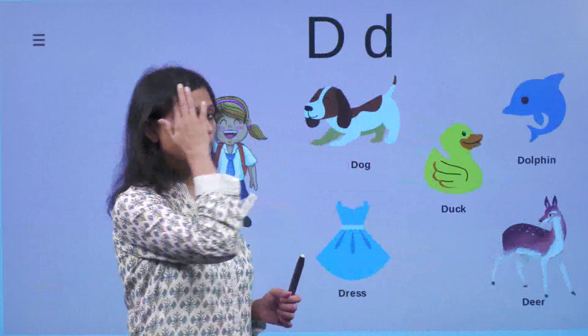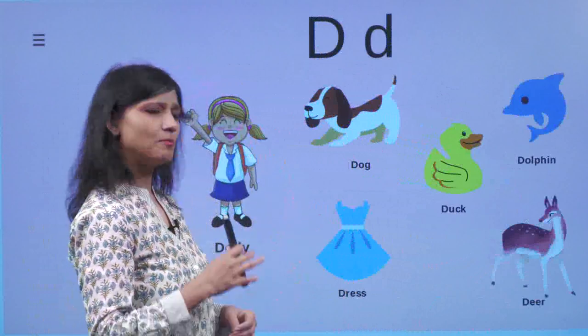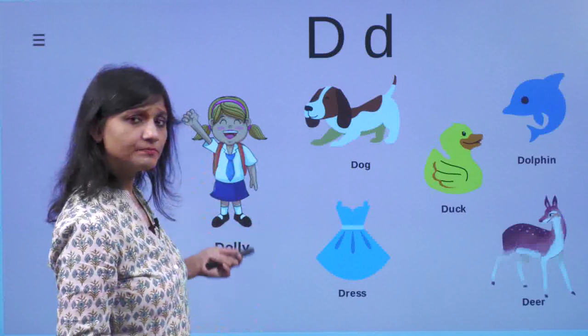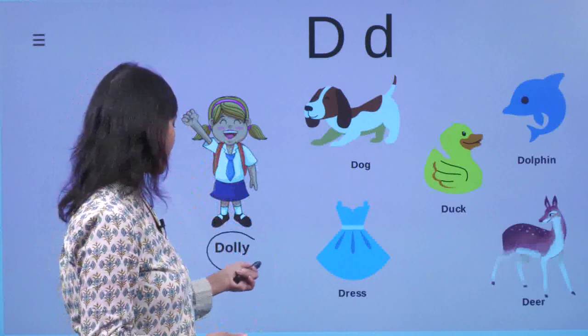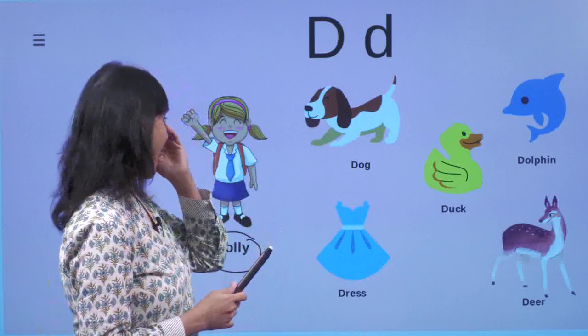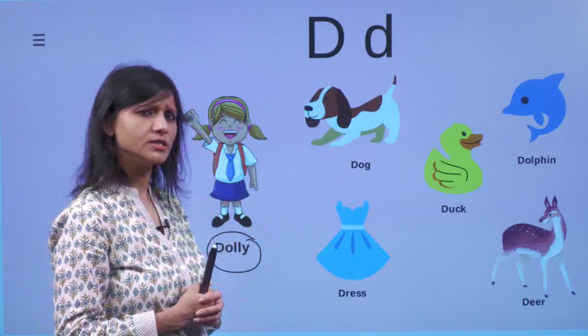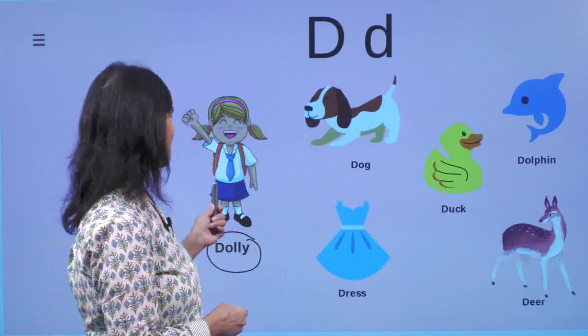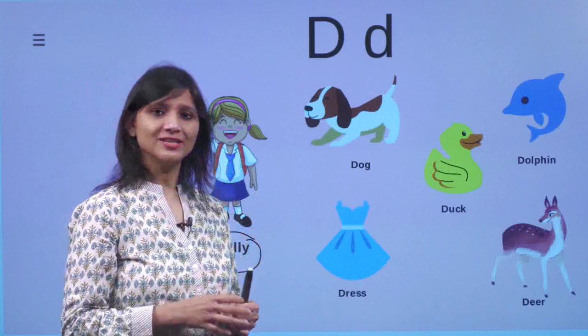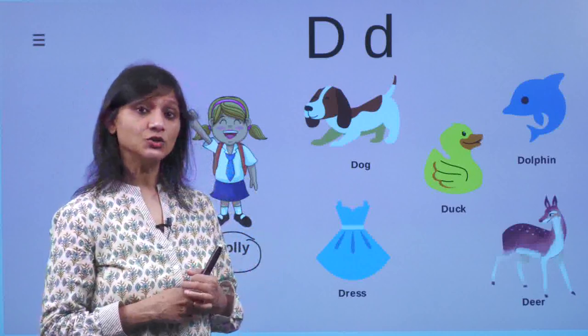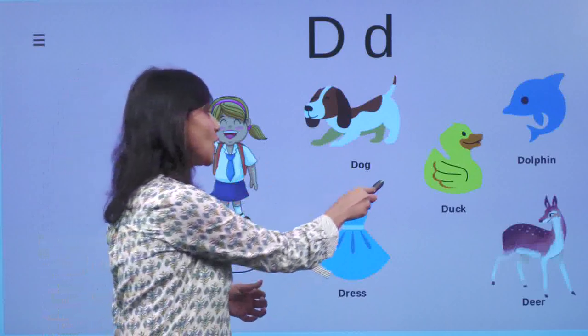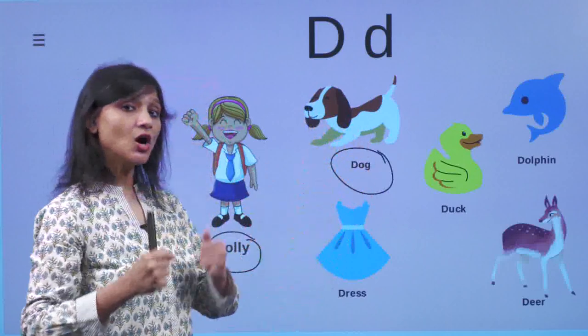Now let's look at our dear D. Can you see a little girl here? Her name is Dolly. And Dolly seems to be a very naughty girl, just like most of you. Dolly was a very naughty girl but Dolly loved lot of animals. She had her pet dog with her.